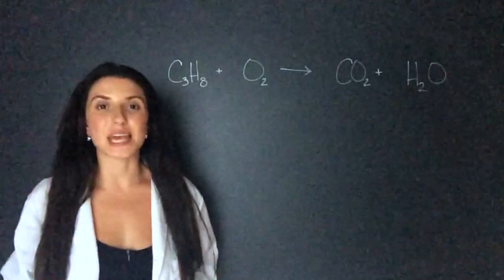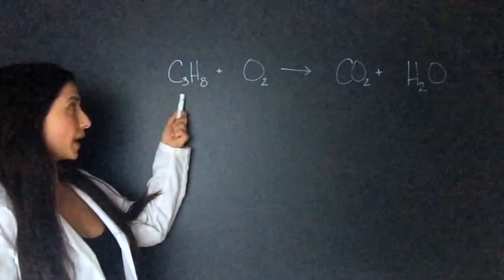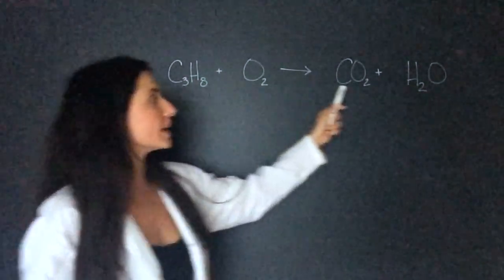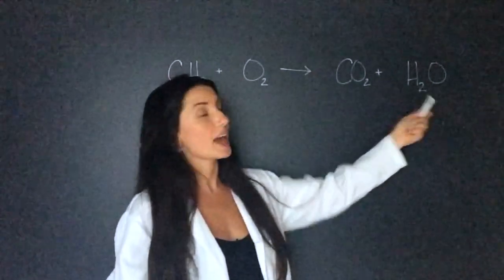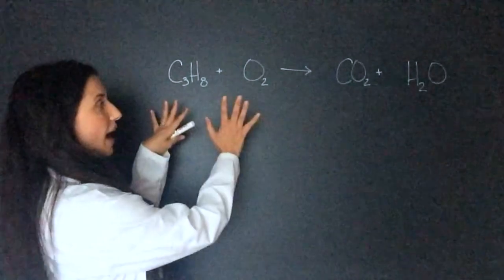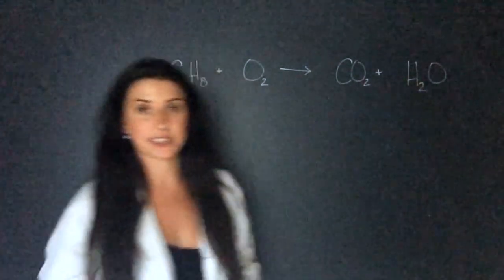The example I'll do is a very simple one. Here we have propane C3H8 with oxygen going to carbon dioxide and water H2O. Now this is how we write chemical equations. We have the reactants here and then an arrow to show us the products that occur.